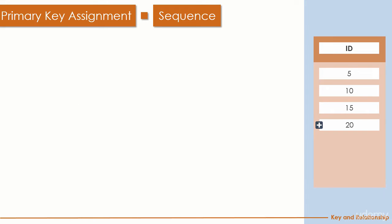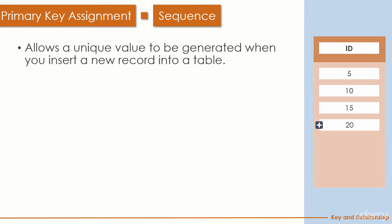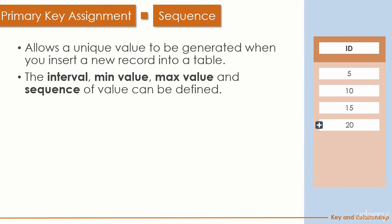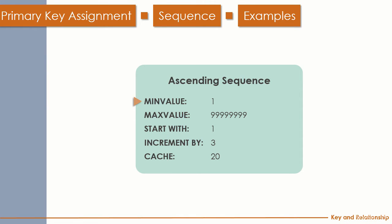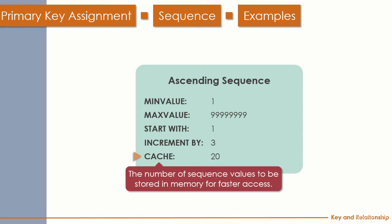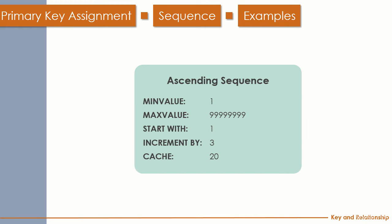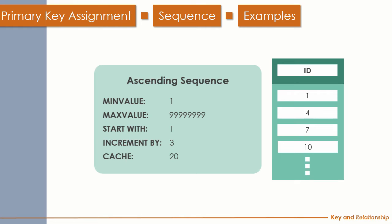The third option is the sequence. The sequence allows the database to generate an ID for your new record, but the generation is based on your settings including interval, min, and max value. For an ascending sequence: set the min value starting from 1, a very large max value, start value of 1, increment by 3, and a cache to allow the database engine to optimize speed. With those settings, inserted data will receive IDs of 1, 4, 7, 10, etc.